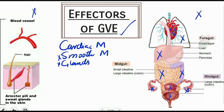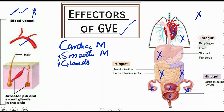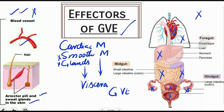Outside the trunk we have the body wall and the skin. Here we have involuntary effectors in the form of blood vessels, arrector pili smooth muscles, and sweat glands present in the skin. In short, wherever in the body we have smooth muscle or glands, this is the viscera and it will be supplied by the general visceral efferent component. In this lecture, I'll show you how general visceral efferent neurons will reach all these targets.